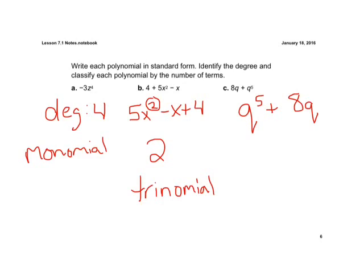Now identify the degree — the highest exponent is 5, so our degree is 5. And classify each polynomial by the number of terms — we see there are two, so it's what we call a binomial.